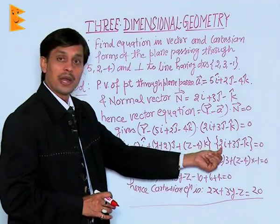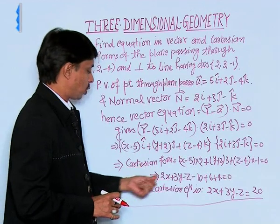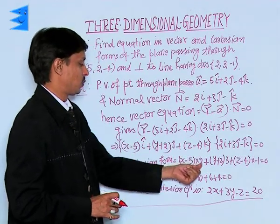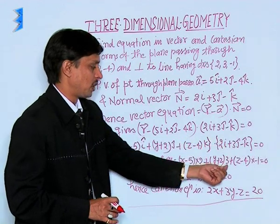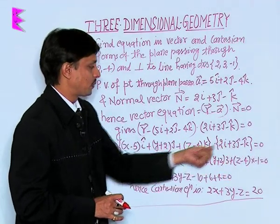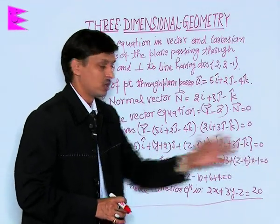So (x - 5) will be multiplied by 2, giving 2(x - 5); (y + 2) times corresponding j coefficient 3; (z - 4) times corresponding k coefficient -1, equals 0.